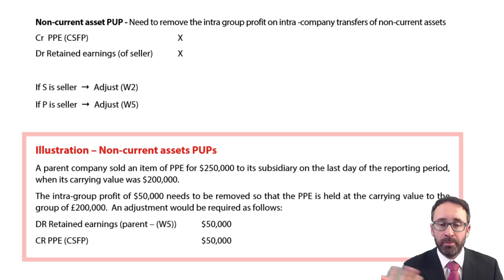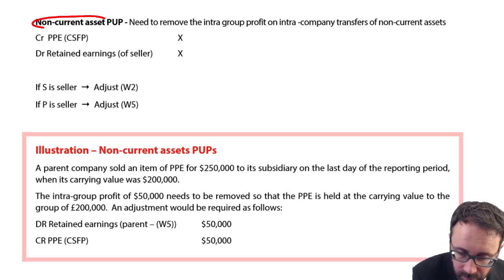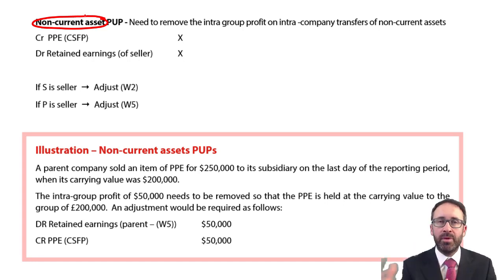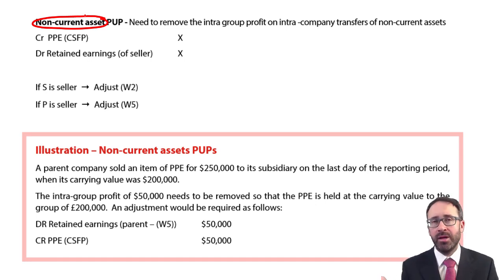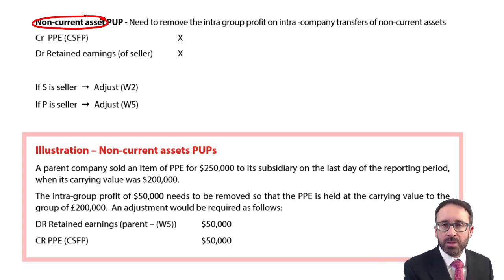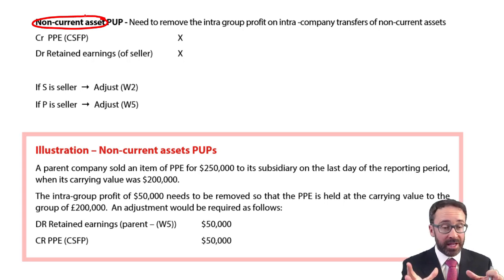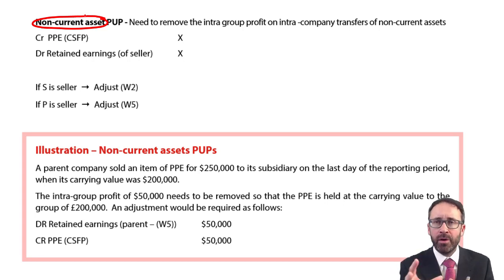There is a provision for unrealized profit — a PUP adjustment — on PPE or a non-current asset, because as well as selling inventory between the parent and the subsidiary or vice versa, we could also transfer an asset. There could be a piece of machinery currently within the parent's books that we need to transfer into the subsidiary's books. When we transfer it, like any sale of property, plant and equipment, there is likely to be a profit on sale, and that profit will sit within the group accounts when we consolidate, because whoever made the profit is recognizing it in the individual accounts.